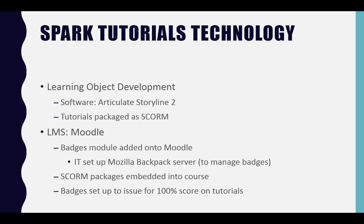I get asked a lot what I use to develop my program. For the learning objects or tutorials, I used the authoring software Articulate Storyline 2. It's fairly popular in libraries, has a low learning curve, and produces pretty slick-looking tutorials. These tutorials are packaged as SCORM, which means they talk to our learning management system. Our learning management system is Moodle. We did have to get the badges module added on to Moodle — I lobbied IT for about a year to do that, and finally they did. There are still a few technical problems in the back end, but the system works.